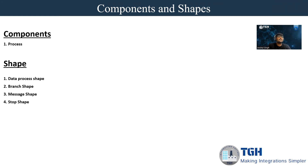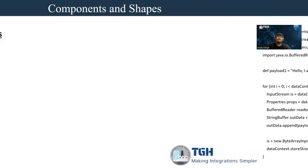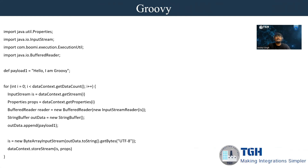The Data Process shape is used for the manipulation of data. It has many functionalities, one of them being custom scripting. Inside custom scripting it provides two basic script options: Groovy and JavaScript. Let's get started with Groovy.